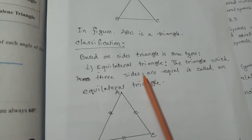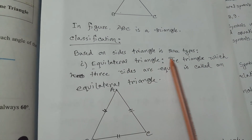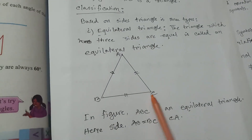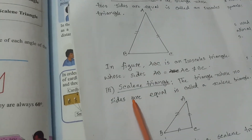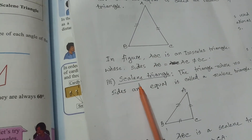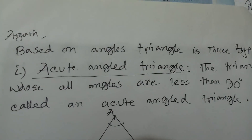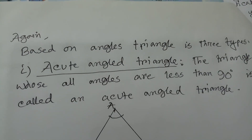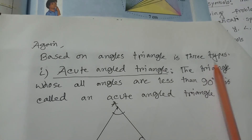Okay everybody. We discussed that based on sides, triangle is three types: number one, Equilateral Triangle; number two, Isosceles Triangle; and number three, Scalene Triangle. Now, based on angles, triangle is also three types.